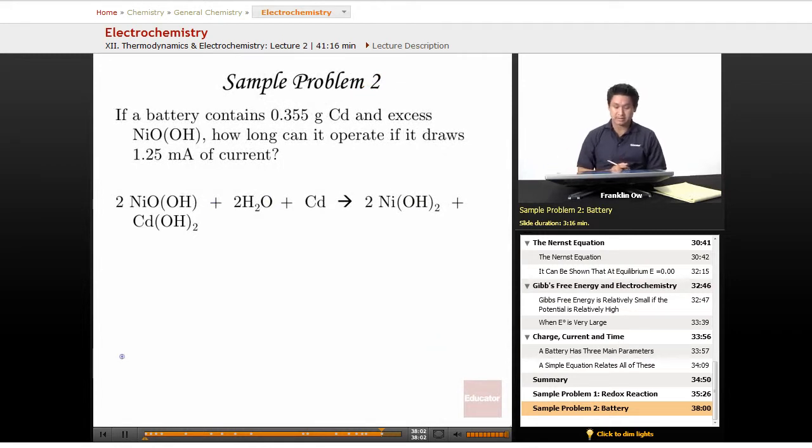Problem number two: If a battery contains 0.355 grams of cadmium and excess nickel oxide hydroxide, how long can it operate if it draws 1.25 milliamps of current? You're given the balanced redox reaction below.